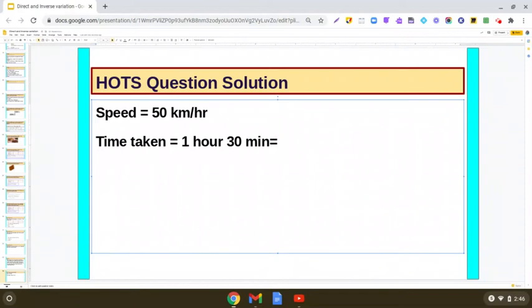It is 1 hour and 30 minutes meaning 30 upon 60 hour. That is 0.5 hours. So I am writing it 1.5 hours. After that, we will be calculating the distance. So distance is speed into time. You will be using this formula.